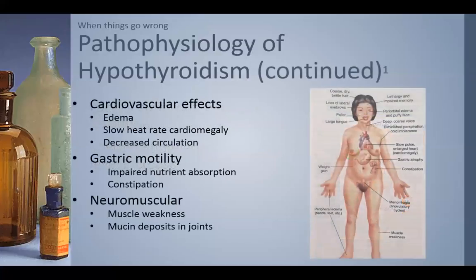Signs and symptoms of hypothyroidism include: cardiovascularly, the heart slows down, rate decreases, and we have poor perfusion. Patients are very intolerant to cold and get decreased cognitive abilities — a mental fog. The GI tract slows down, patients are not absorbing nutrients, and there's decreased motility with increased constipation. Neuromuscularly, myosin is a gel-like substance that deposits under the skin and in joints, causing decreased activity and a slow, sluggish gait. Myosin also deposits in the tongue and enlarges it.